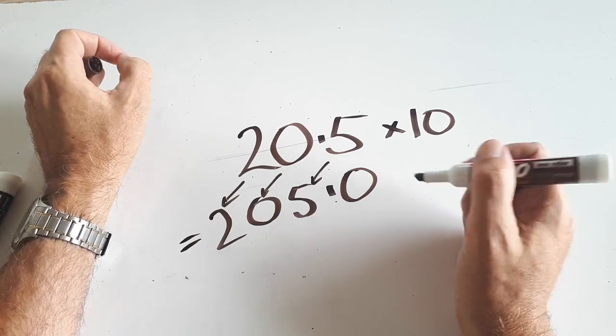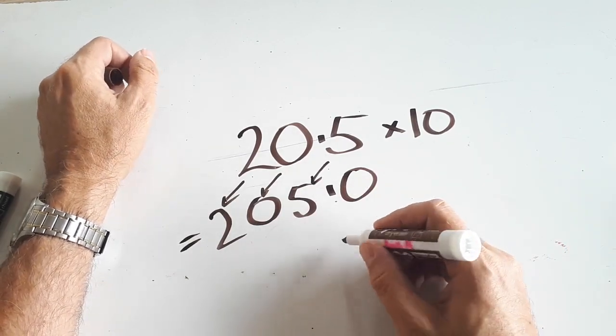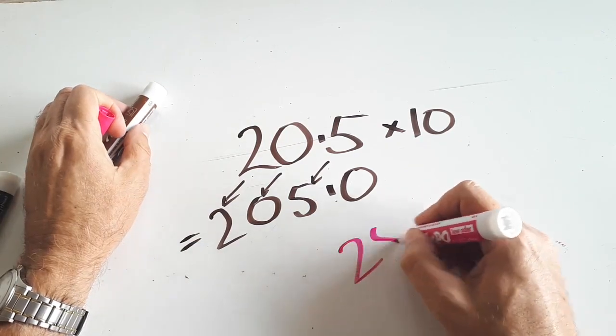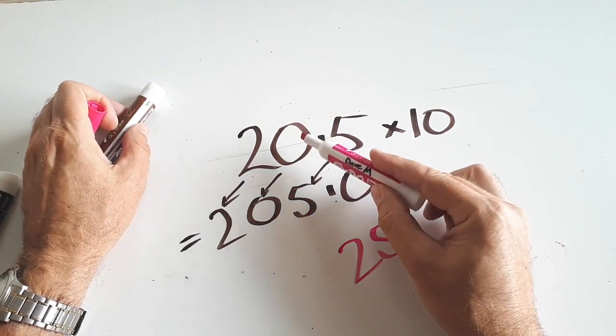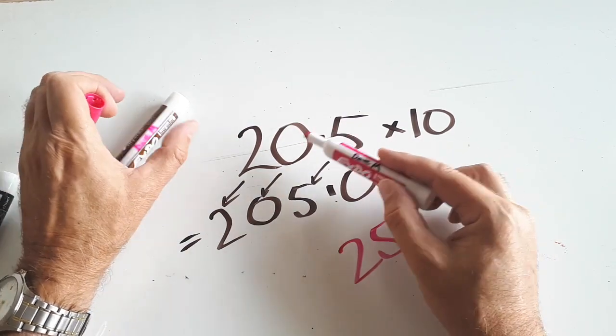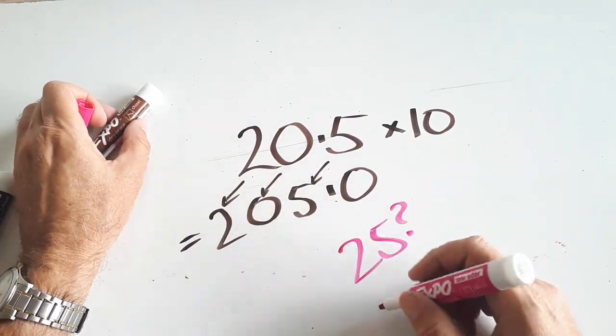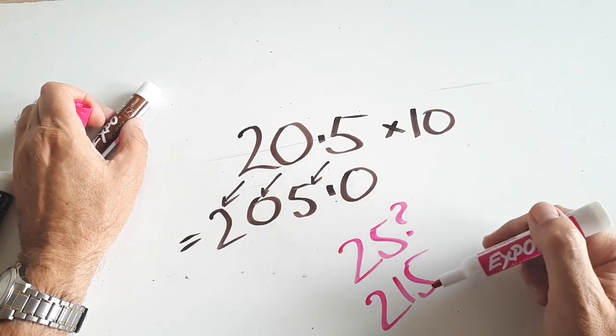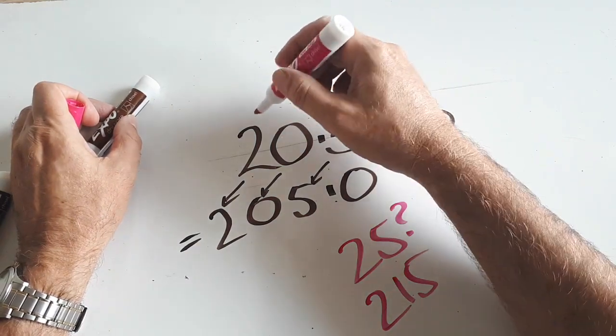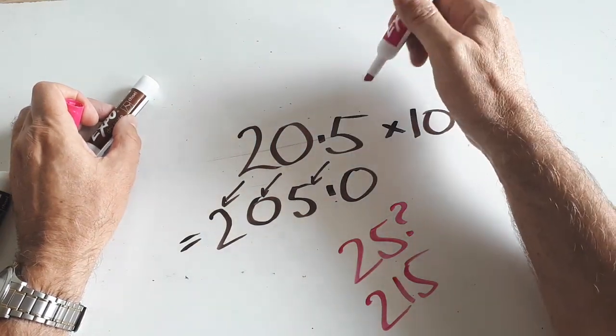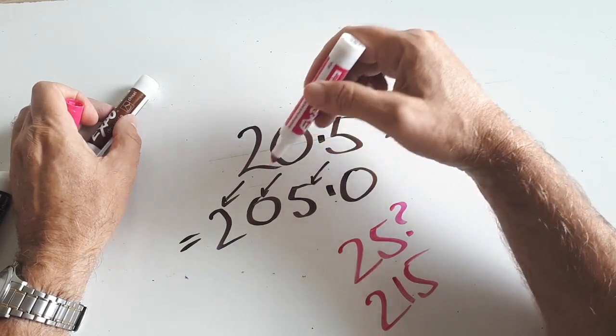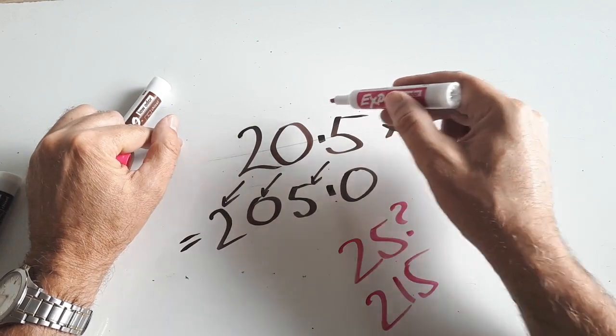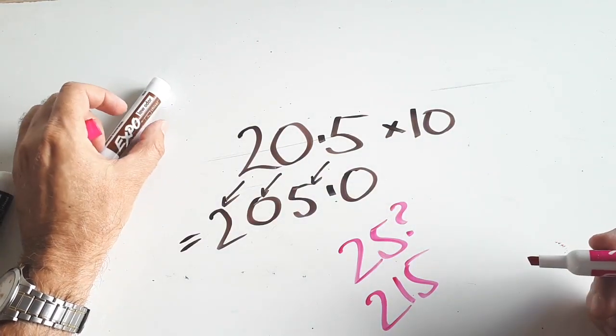People get confused sometimes and they go, is it 25 because they think there's nothing there, so maybe I'll compress the numbers. Is it 215 because I must put something in the 0? No, you can just leave the numbers in exactly the same order. 205, in this case, 20.5 becomes 205 by multiplying by 10. The digits that you start with must stay in exactly the same order.